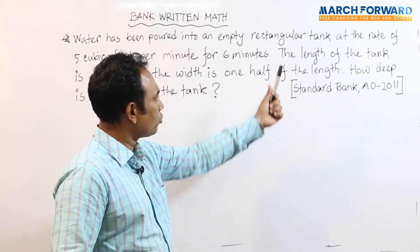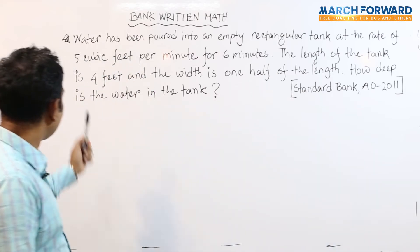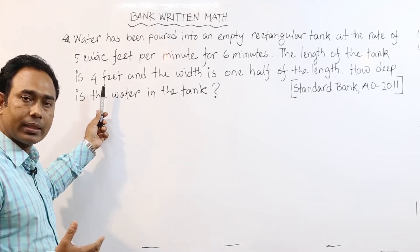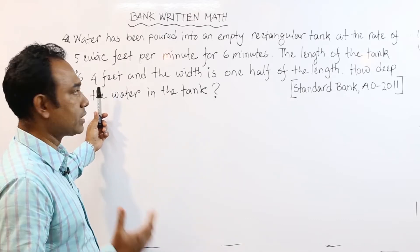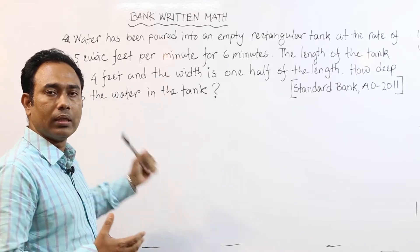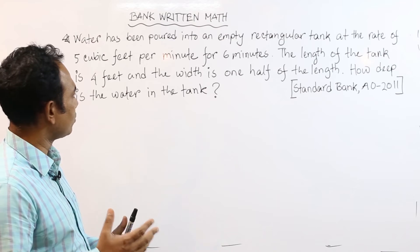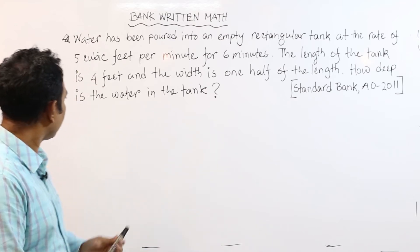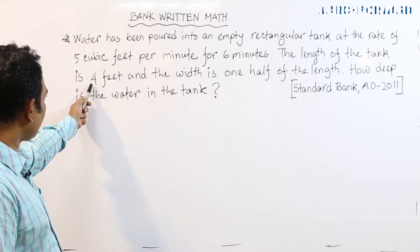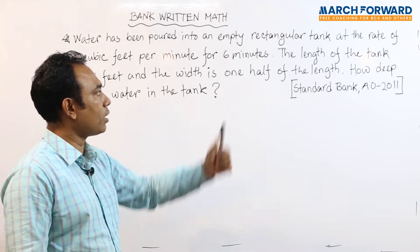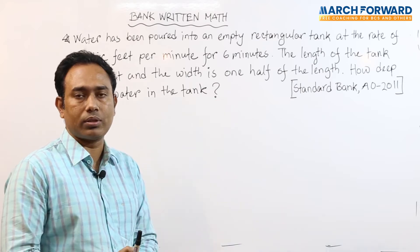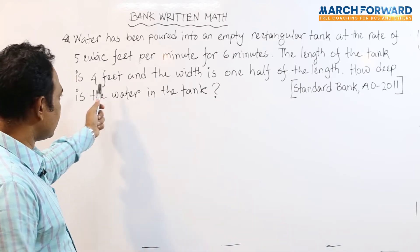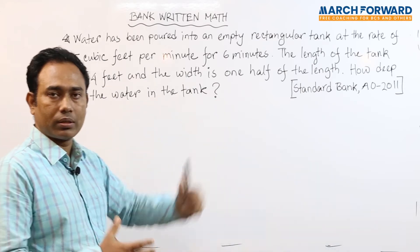The length of the rectangular tank is 4 feet. The width is one half of the length, meaning the width is 2 feet.